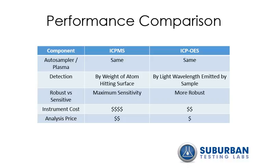There's also a major price difference in the technology. An ICP-OES costs in the $80,000 to $100,000 range, while an ICP-MS can cost upwards of $200,000, making the MS notably more expensive than the OES.